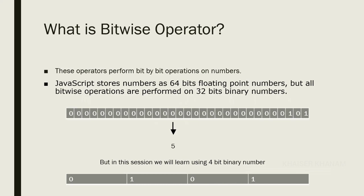So what is a bitwise operator? Bitwise basically means that the action which we are going to perform will be performed bit by bit. You can see these operators perform bit by bit operations on numbers. Whatever numbers we are having, they are going to be converted into binary numbers, and these operators perform operations bit by bit.